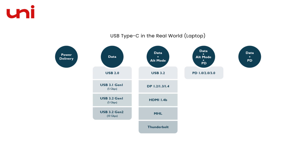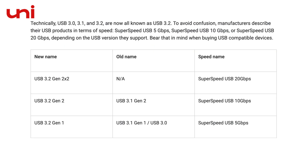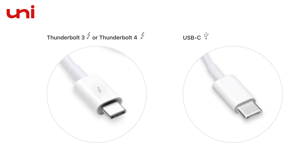USB-C 3.1 would either mean USB 3.1 Gen 1 or USB-C 3.1 Gen 2. If you are thinking about what a Thunderbolt port is — by looks, a Thunderbolt port is the same as a USB-C port, but the difference lies in speed. Thunderbolt 3 gives a maximum data transfer speed of 40 Gbps, which is four times that of USB-C 3.1.